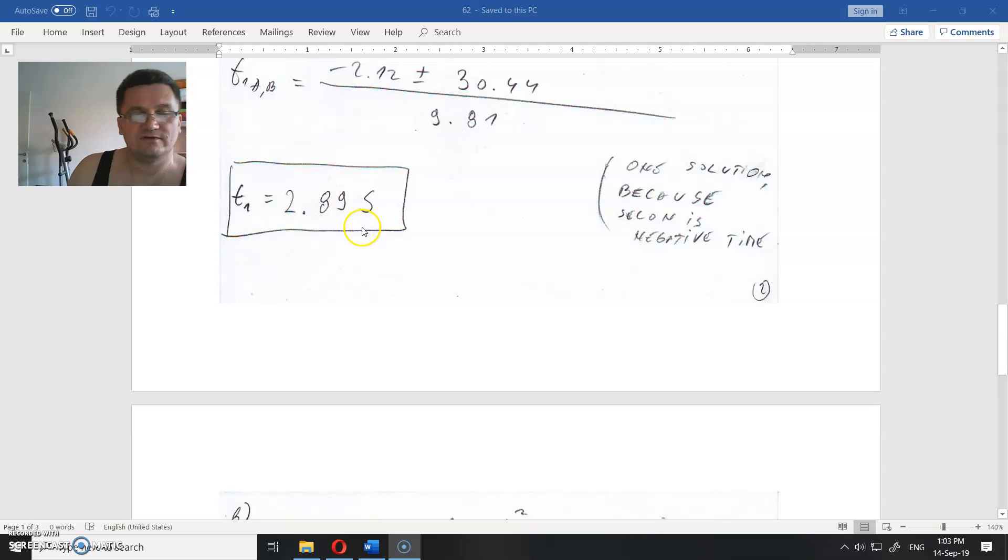So time of flight for the second one will be 1.89 seconds, because it's one second less. It's the same equation, but here the initial velocity is unknown.